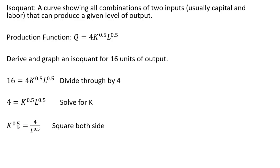I want to get rid of K to the 1/2 power, so I'm going to square both sides. 4 squared is 16, K to the 0.5 squared is just K, and L to the 0.5 squared is just L.